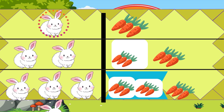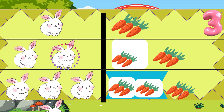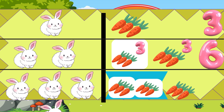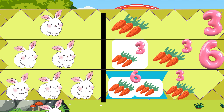One rabbit got 3 carrots. The second rabbit also got 3 carrots. 3 plus 3 makes 6. The third rabbit also got 3 carrots. We already have a total of 6, so 6 plus 3 more is 9.